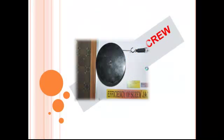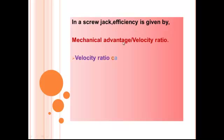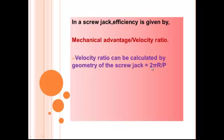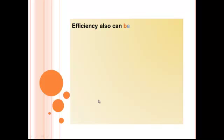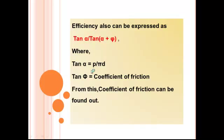Efficiency of Screw Jack. In the screw jack, efficiency is given by mechanical advantage divided by velocity ratio. Velocity ratio can be calculated by geometry of the screw jack that is equal to 2 pi r divided by p. Mechanical advantage is equal to load lifted divided by applied load. Efficiency can also be expressed as tan alpha divided by tan of alpha plus phi, where tan alpha is p divided by pi d and tan phi is the coefficient of friction. From this, coefficient of friction can be found out.